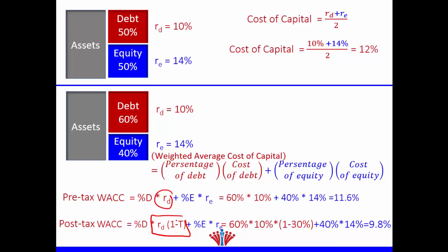The only difference for the after-tax WACC is that we multiply the cost of debt by (1 − t) to reflect the tax shield benefit. Note that taxes affect only debt, not equity. So the formula becomes: 60% × 10% × (1 − 30%) + 40% × 14%. We don't multiply the cost of equity by (1 − t) because taxes don't affect equity. This gives us 9.8%.